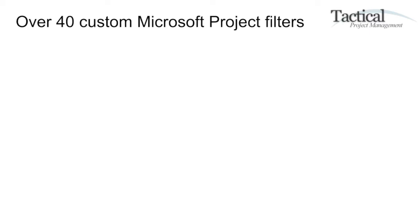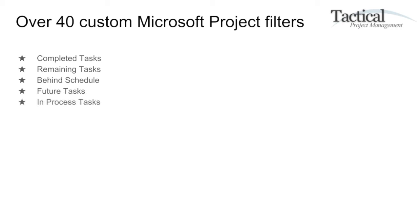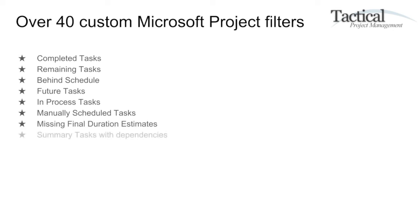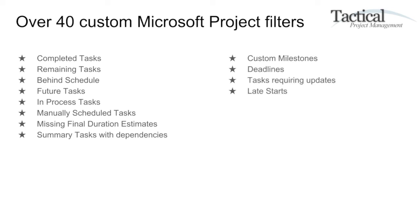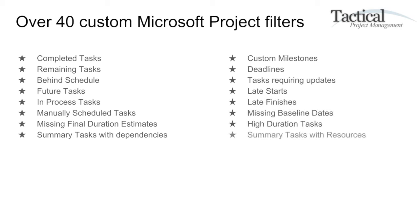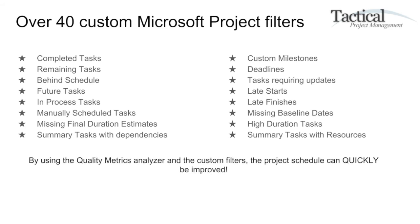Included in this tool, there are over 40 custom Microsoft Project filters. They cover completed tasks, remaining tasks, behind-scheduled tasks, future tasks, in-process tasks, manually scheduled tasks, missing final duration estimates, summary tasks with dependencies, custom milestones, deadlines, tasks requiring updates, late starts, late finishes, missing baseline dates, high duration tasks, and summary tasks with resources. By using the Quality Metrics Analyzer and the custom filters, the project schedule can be quickly improved.